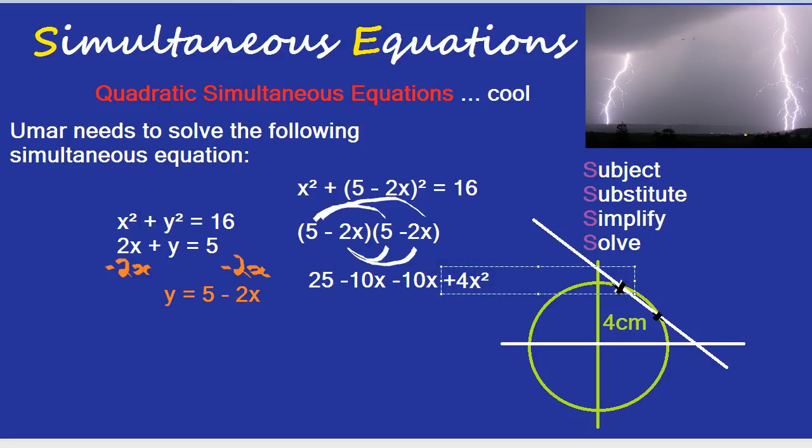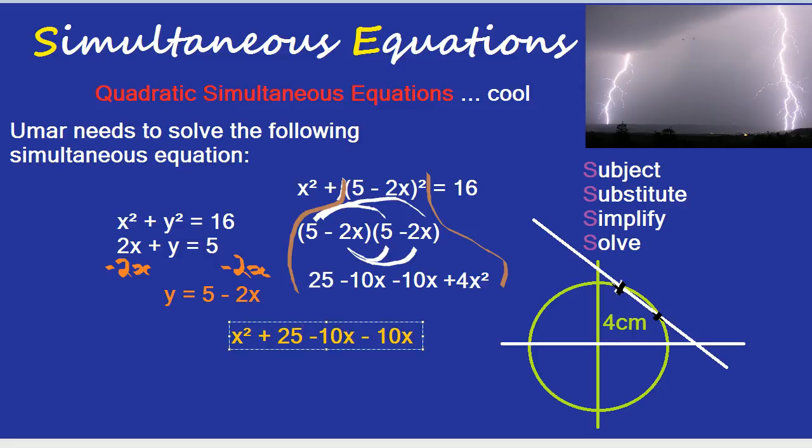Putting all of that back into the original equation, remember this bracket here, let's do it in orange or brown actually, this bracket all expands into that. So you can replace with all of this. So I'm going to write it again nice and neatly. This gives us X squared, which we had to begin with. Then plus 25 minus 10X minus 10X and plus 4X squared.